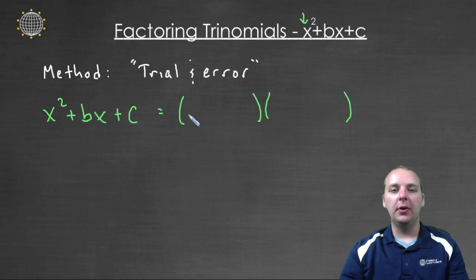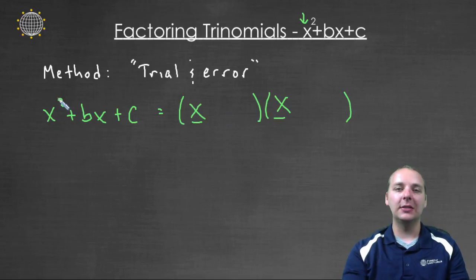For example, if your leading term, the f, the blank times blank is going to give you x squared, really the only thing you could possibly have would be an x and an x. And in fact that's the case. So we'll start by putting an x and an x, because those are the only two things you could multiply to get x squared.